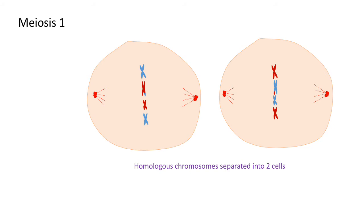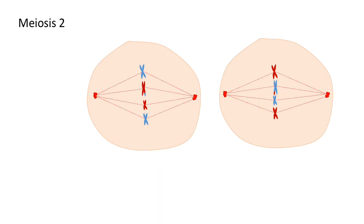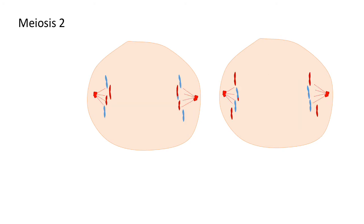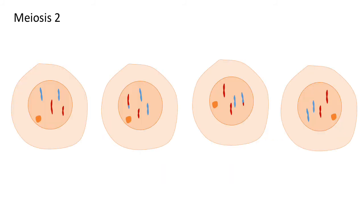Now we continue on to meiosis two. By the end of meiosis two, we have four gametes.